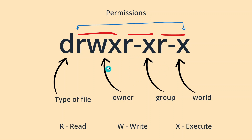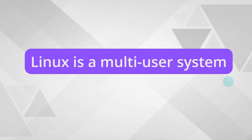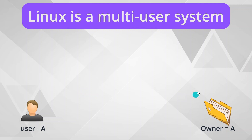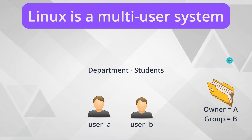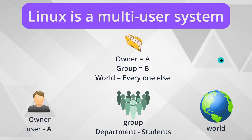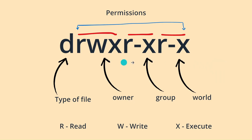R means read, W means write, and X means execute. Linux is a multi-user system. A user who creates a file is the owner. For example, if we have a department called 'students' and add users to that group, we can use the second triad to provide similar access to that group. The third triad covers everyone else — for example, if you are hosting a website you would give public access, and that is defined in the third triad. These three triads combine to define the file's permissions.